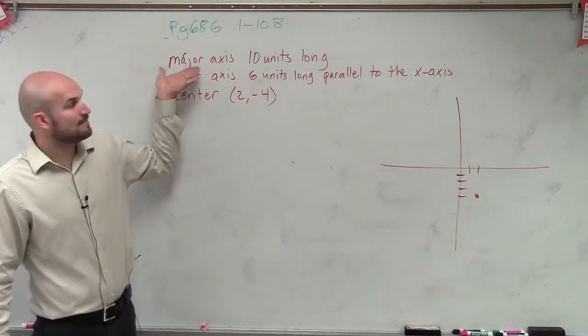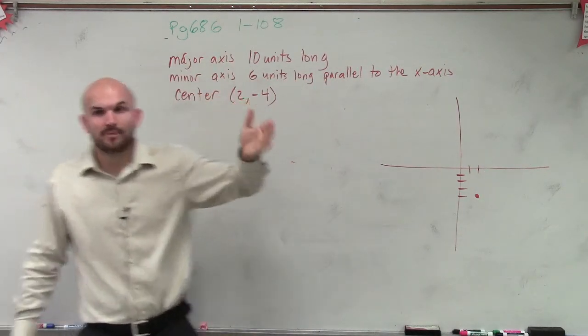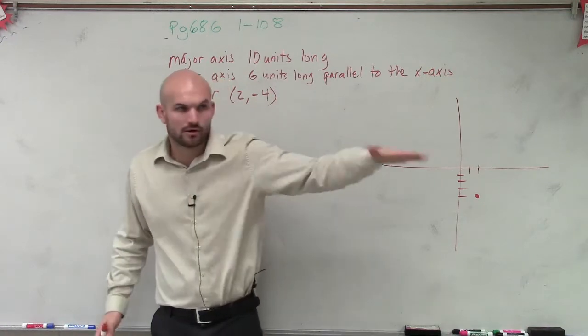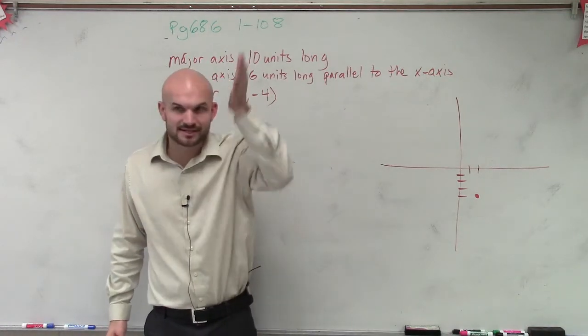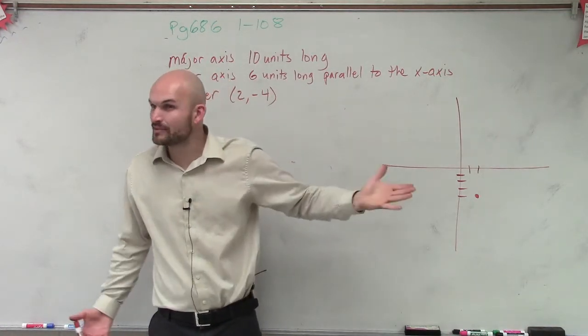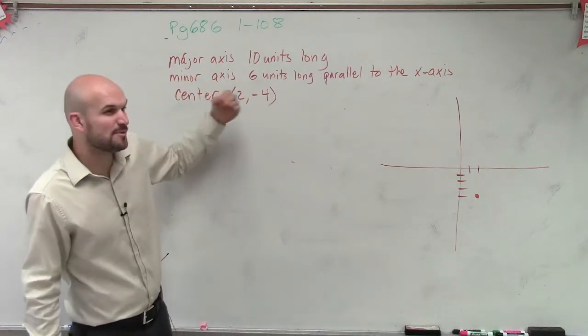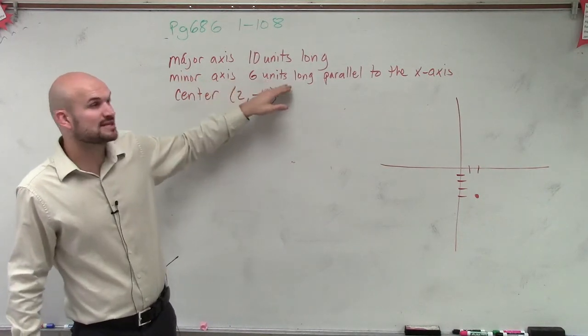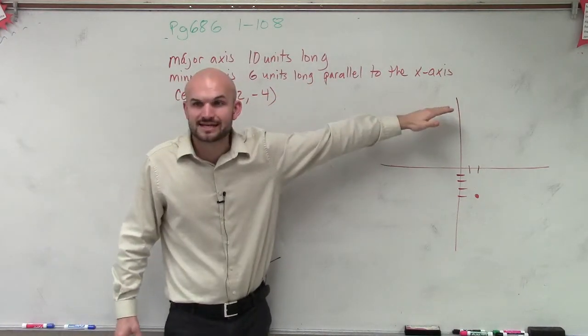Then it says we have a distance of a major axis and a minor axis, but is the major axis like this or like this? Is the minor axis vertical or horizontal? We don't know. But they do give us a little bit more information by saying the minor axis is 6 units long and it's parallel to the x-axis.